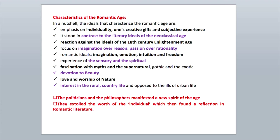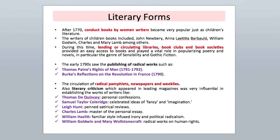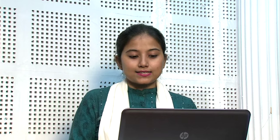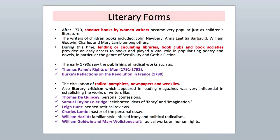The politicians and philosophers manifested a new spirit of the age and extolled the worth of the individual, which then found a reflection in Romantic literature. After 1770 — the later years of the 18th century — conduct books by women writers became very popular, just as children's literature. The writers of children's books included John Newberry, Anna Letitia Barbold, William Godwin, Charles and Mary Lamb, among others. During this time, there were lending or circulating libraries, book clubs, and book societies, which provided easy access to books and played a vital role in disseminating different literary forms, like popularizing poetry and novels — in particular the genre of sensibility and gothic fiction. We can learn about these literary forms in more detail in a subsequent program.